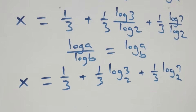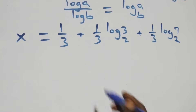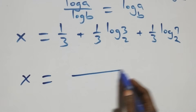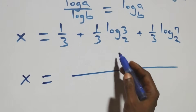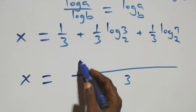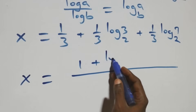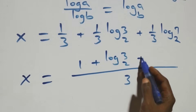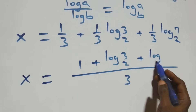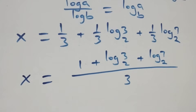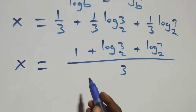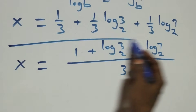The next step: we bring this together as one fraction. We have x equals 1 plus log 3 base 2 plus log 7 base 2, all over 3. This is the value of x.